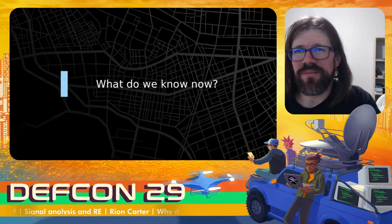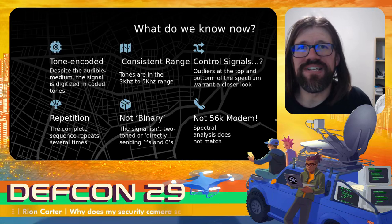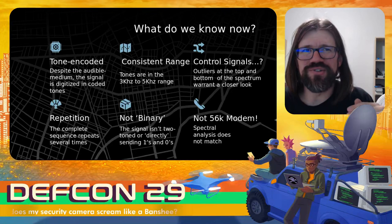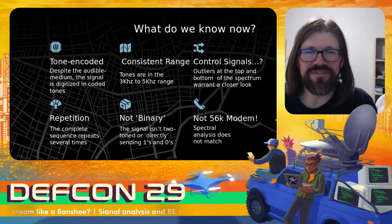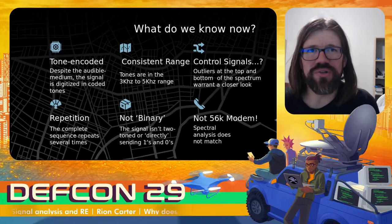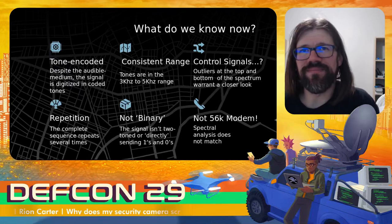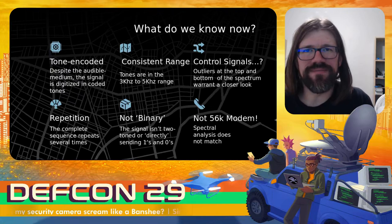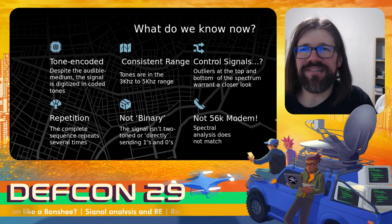What do we know now from our quick manual analysis? We can see there is encoding going on — there's a digitized signal, but it isn't binary; it's not just two tones, one and zero. There's a range of frequencies represented, some type of digital encoding, and the frequencies seem to be centered in the three to five kilohertz range. My suspicion is that the signals that are outliers at the top and bottom are control signals that warrant a closer look. We also see repetition — the complete sequence repeats itself at least three times. And we can confirm this is not a 56K modem or a fax signal.